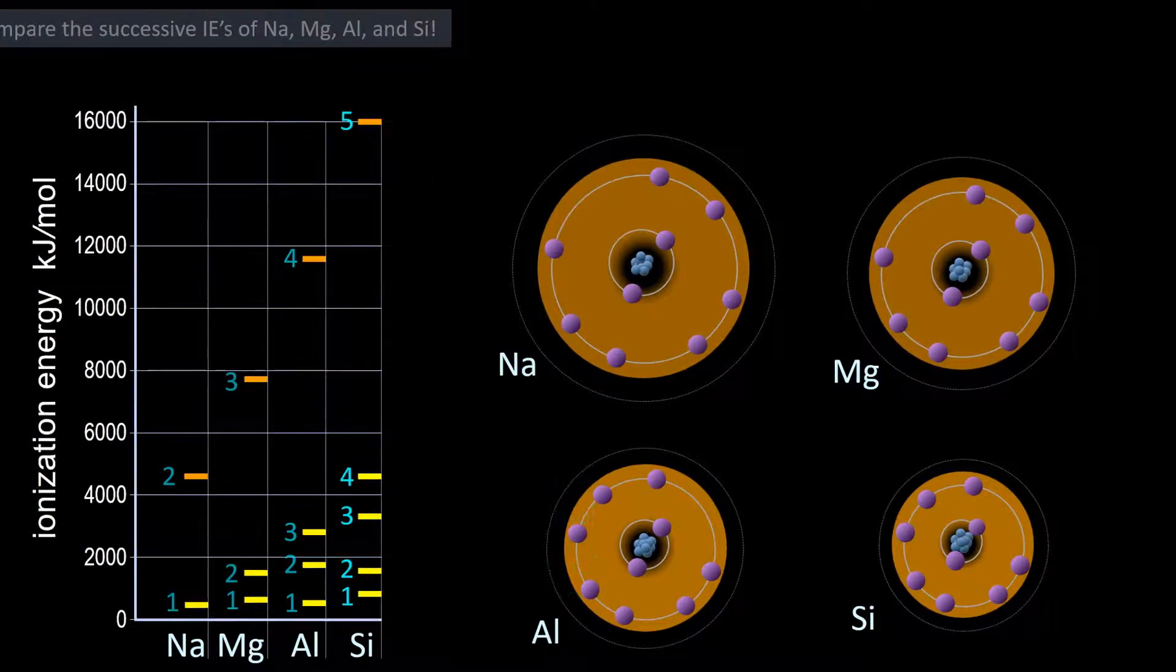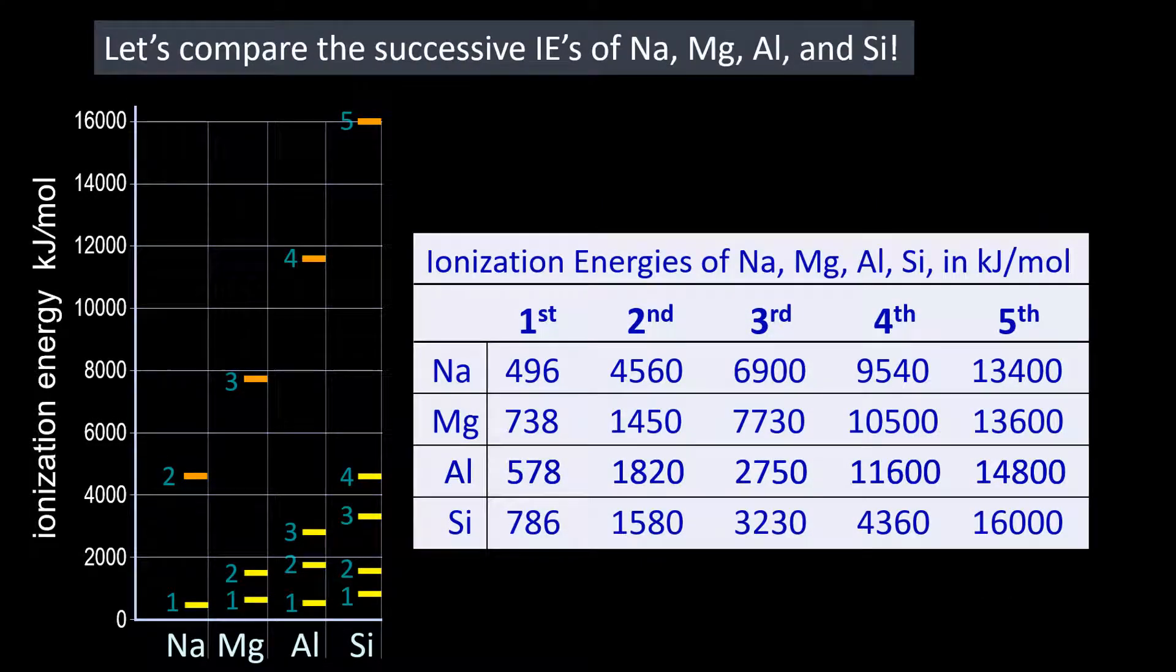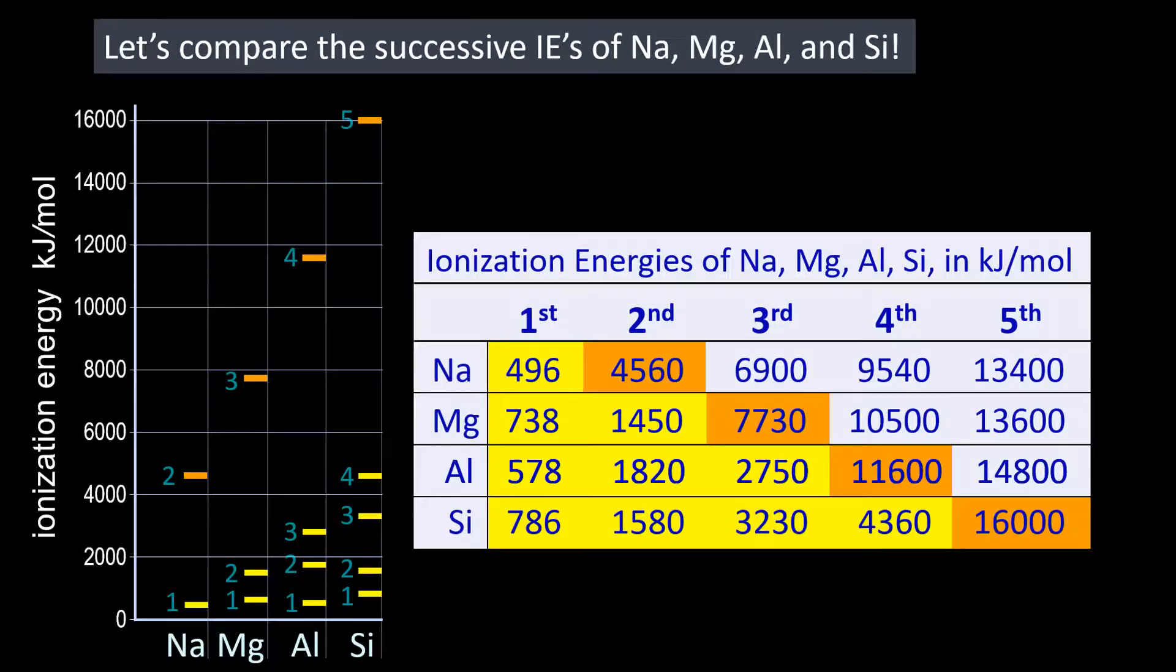If we compare the successive ionization energies in a table with ionization energies for valence electrons in yellow and core ionization energies in orange, we can see the big jumps in ionization energies for each element occurs at the point when removing an electron from a noble gas electron configuration.